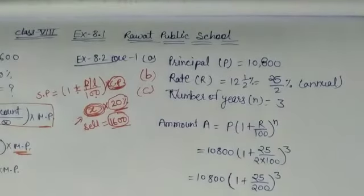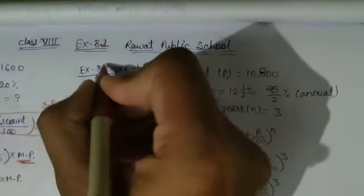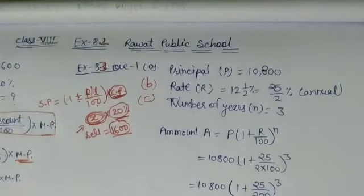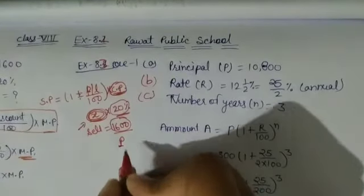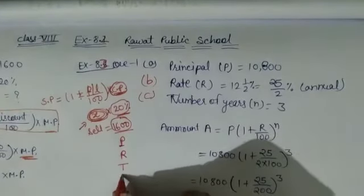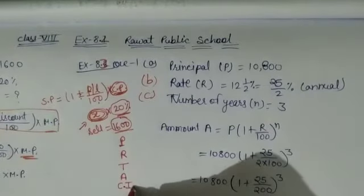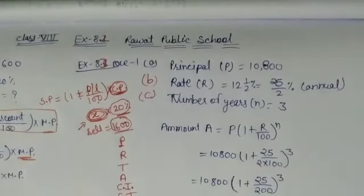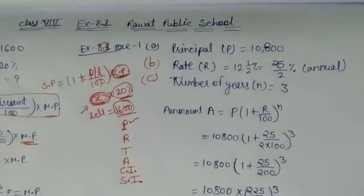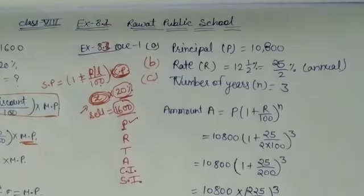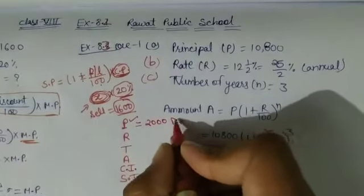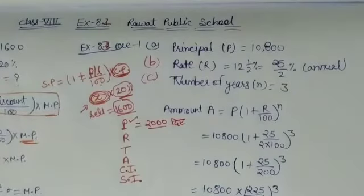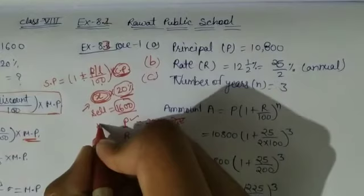This is A part in exercise 8.2 and 8.3. In 8.3 there are some different things. Let's first understand the terminology: Principal — not a principal ma'am — Principal means the Principal Amount; Rate, Time, and Amount; and CI — Compound Interest — and SI — Simple Interest. Let's read all these terms first. Principal, in very simple language...